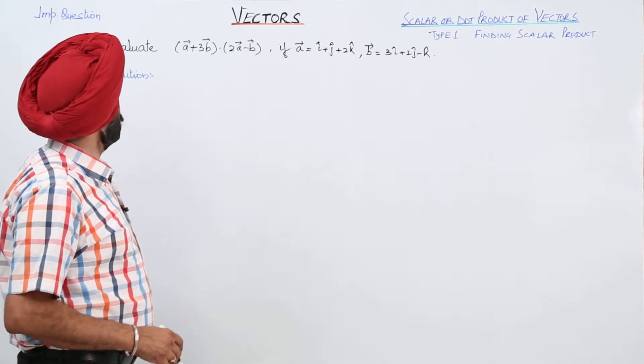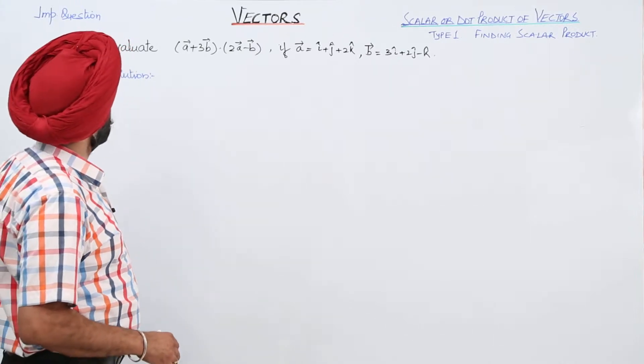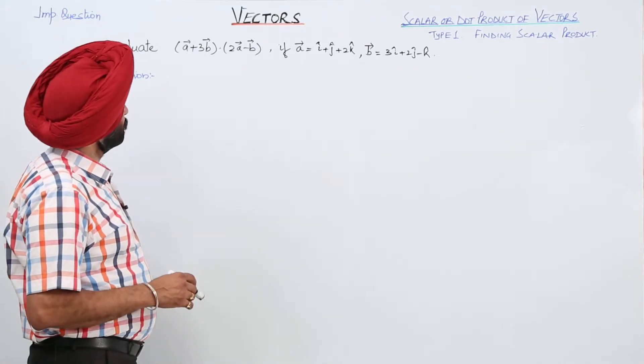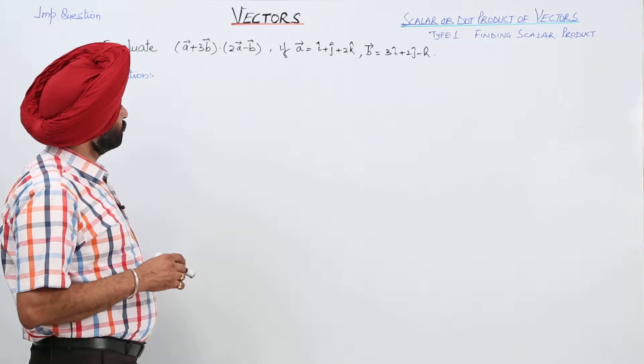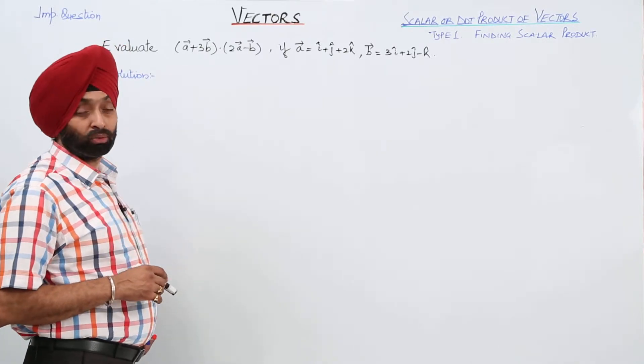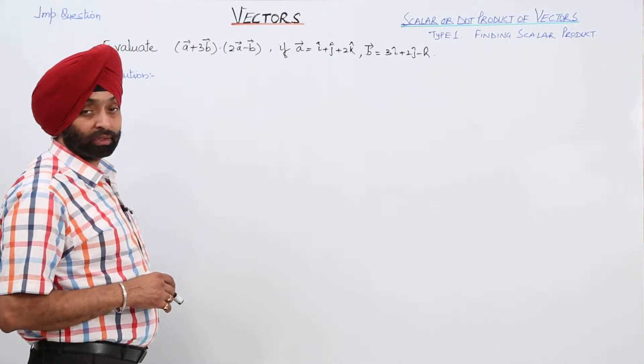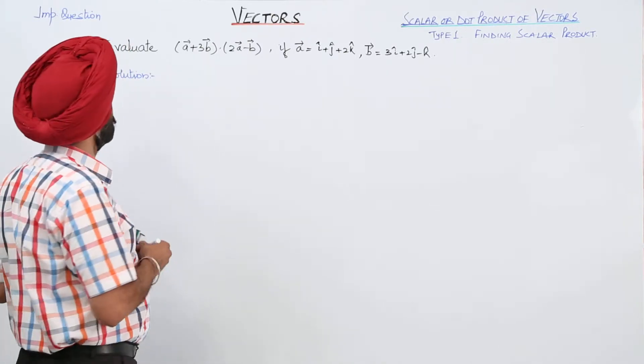We have to evaluate (vector a + 3·vector b) dot product with (2·vector a − vector b).